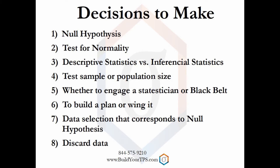Descriptive statistics are statistics that are based on measuring a whole population. Often that is not possible, and in that case you would use inferential statistics, which use a random sample to determine characteristics about a population. It should be clear which type of statistics to use. It's good to have an idea about the size of the sample or population that you will be measuring. As sample sizes increase, the confidence in the results' accuracy increases.